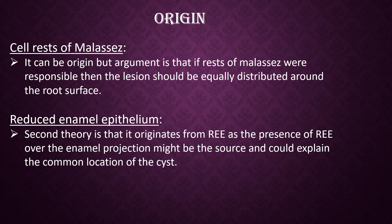Origin. Cell rests of Malassez can be the origin, but the argument is that if rests of Malassez were responsible, then the lesion should be equally distributed around the root surface. The second theory is that it originates from the reduced enamel epithelium, as the presence of reduced enamel epithelium over the enamel projection might be the source and could explain the common location of the cyst.